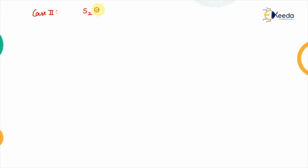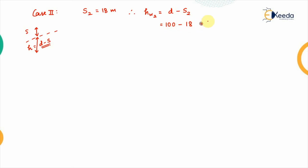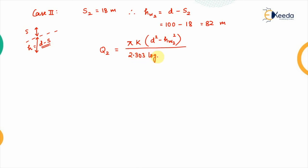Corresponding to Case 2, the drawdown s2 is given as 18 meters. Since the drawdown is 18 meters, the total height of water in the well is d minus s2. Therefore h_w2 equals 100 minus 18, which equals 82 meters. Since we do not know the discharge for this case, Q2 equals pi times k times (d squared minus h_w2 squared) divided by 2.303 log base 10 of (R / r_w).